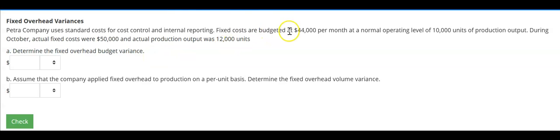Fixed costs are budgeted at $44,000 per month at a normal operating level of 10,000 units. So these are our standard amounts. And we know that fixed costs don't generally change within what we call the relevant range. However, that is not universally true.